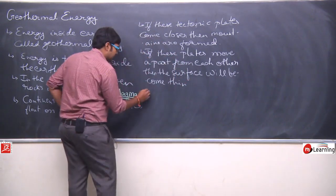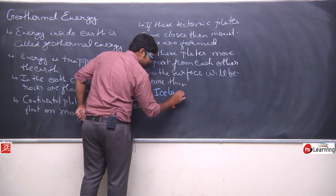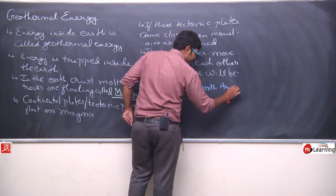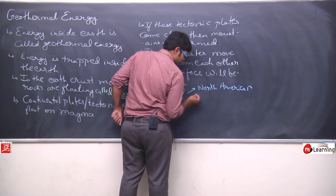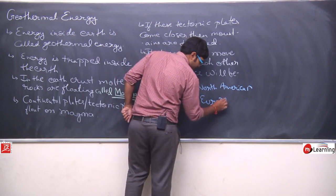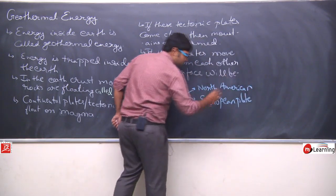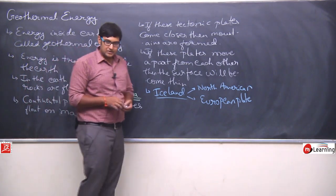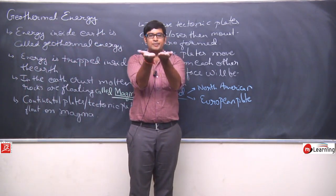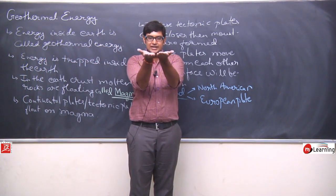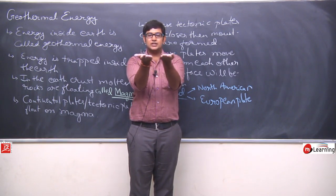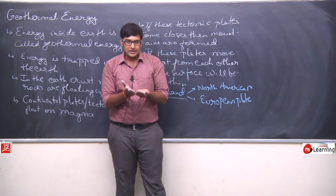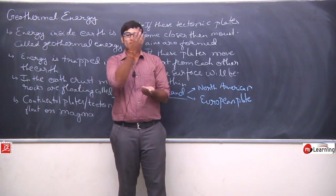This kind of surface you will find in Iceland. Iceland is located at the edge of the North American plate and the European plate. Slowly both tectonic plates are moving away from each other, the separation is increasing. So Iceland's surface is becoming thinner and thinner, and as it becomes thinner, the heat from below is moving upward.